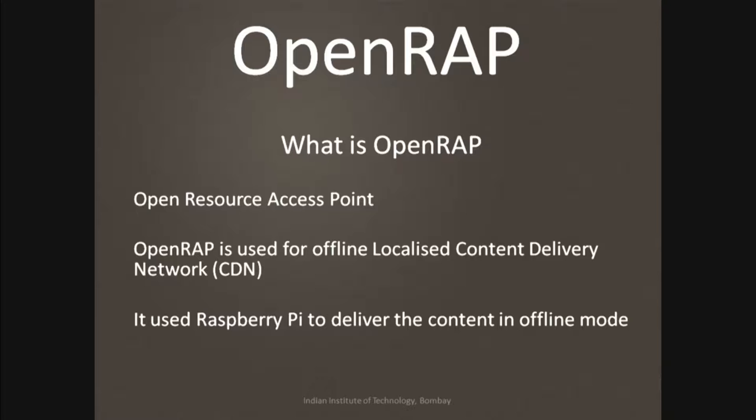OpenWrap is used for offline localized content delivery networks. You must have heard of content delivery networks during your networking coursework. Traditional CDNs have large farms of servers used by big companies like Akamai and other giants. This is going to be a very small CDN running only on Raspberry Pi.